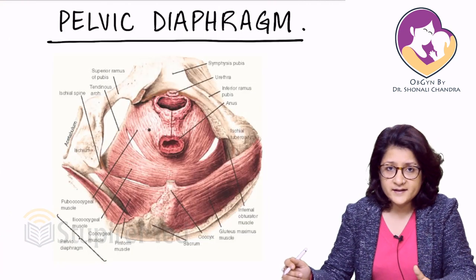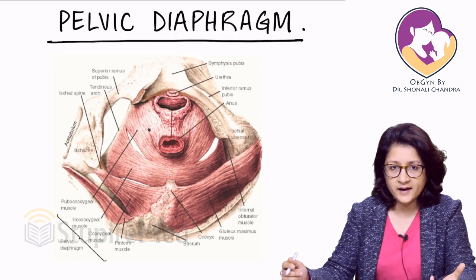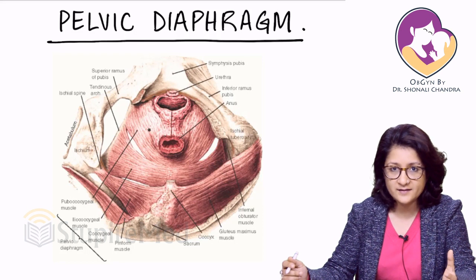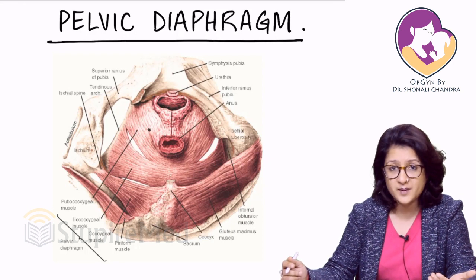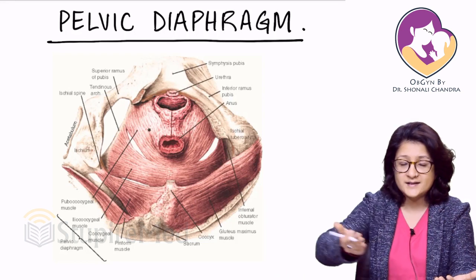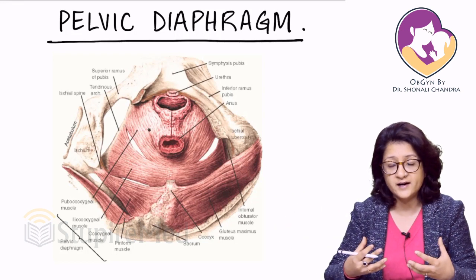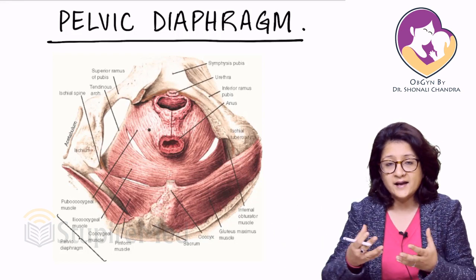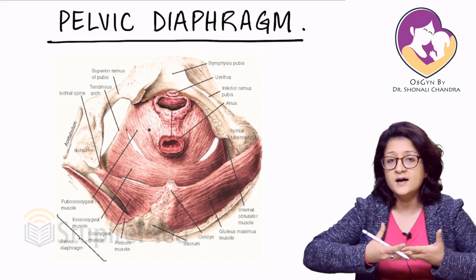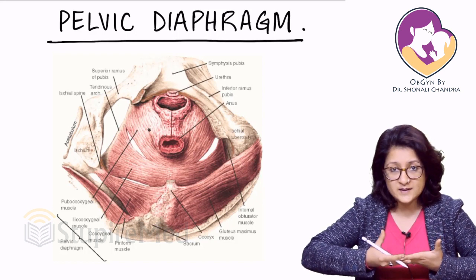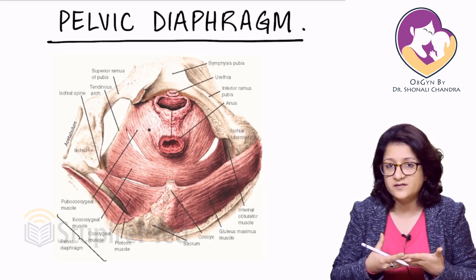Now talking about the pelvic diaphragm: the tubes — urethra, vagina, and anus — exit to the outside from the pelvic cavity, which is all hollow at its exit. So it has to be covered by the pelvic diaphragm. It is a sheet of muscle composed of various muscles going from one end to the other, encasing the vagina, urethra, and anus, thus providing stability and support.